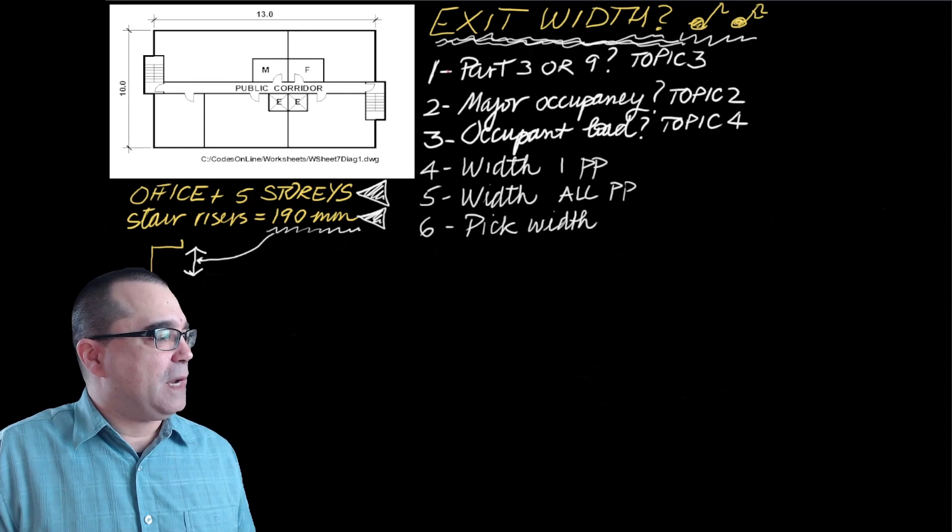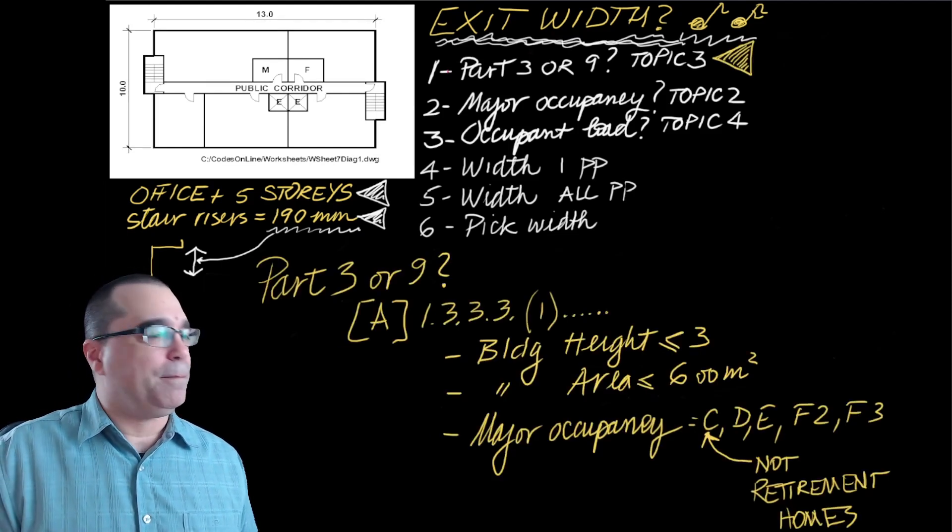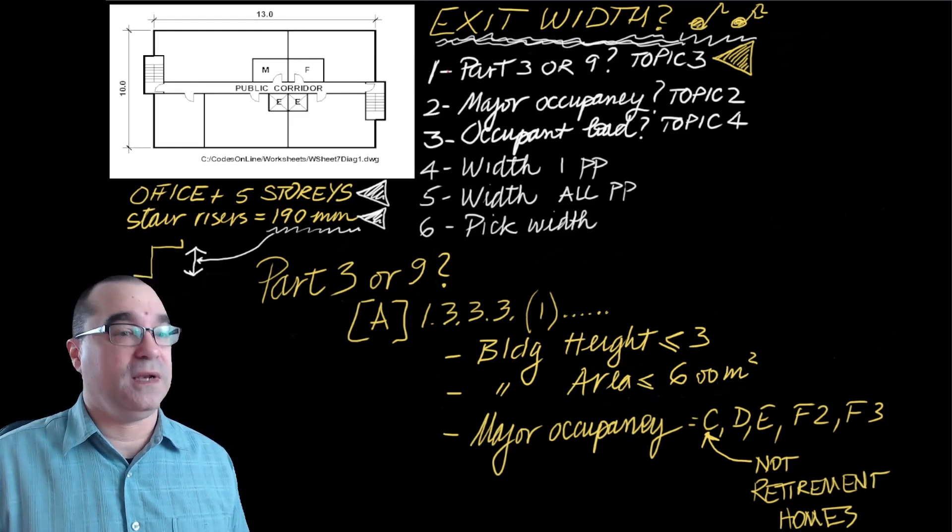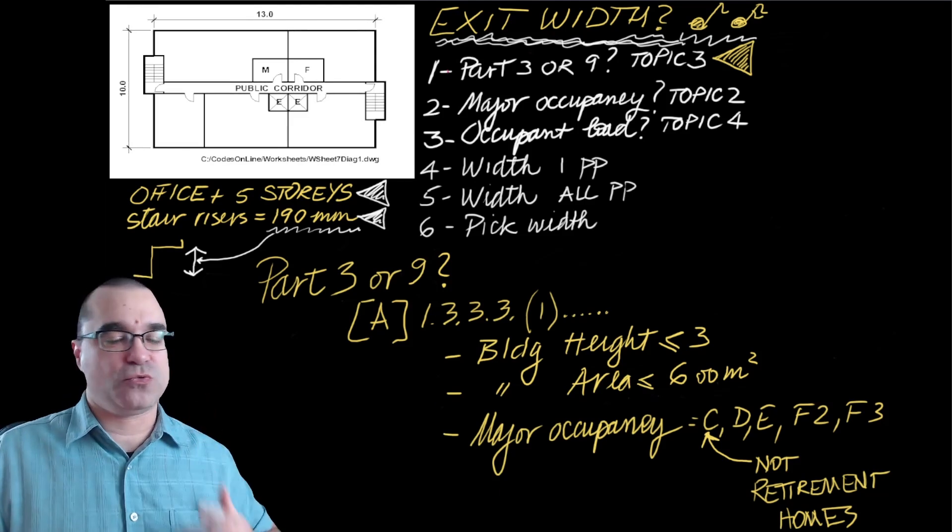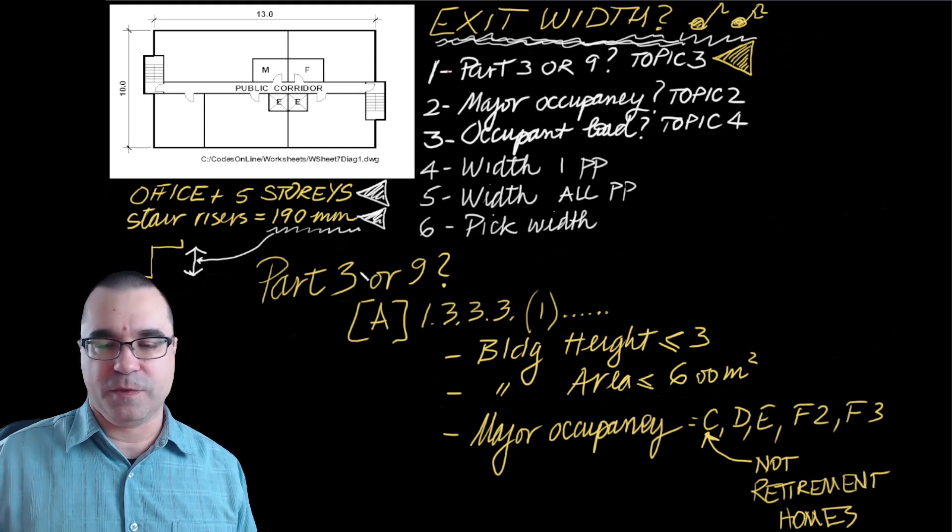Let's start with step number one which is identifying whether or not this building is a Part 3 building or a Part 9 building. Because knowing that tells us whether we start with Part 3 of the Ontario Building Code or Part 9 of the Ontario Building Code.